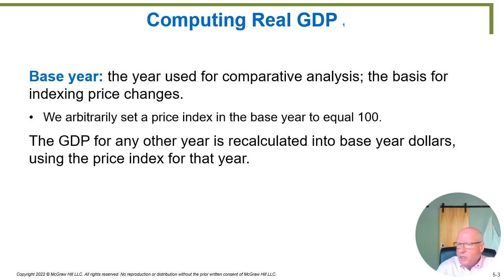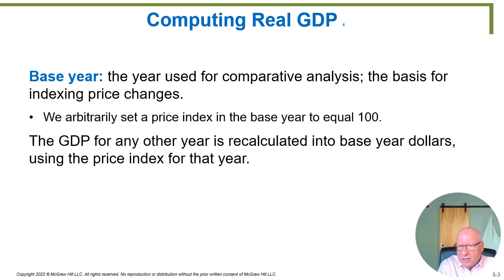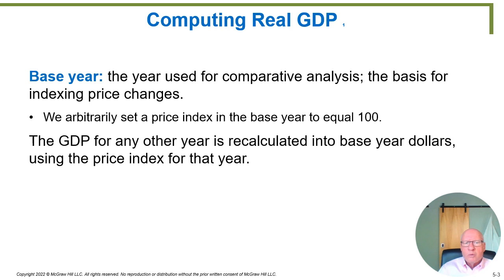Every ten years or so we do another survey, because with new inventions coming out you can't stick with the same survey forever — things have changed so much over the years. So roughly every ten years the government goes out and does another survey and then declares that to be the base year. We're going to recalculate our GDPs for all years into base year dollars, and then we can declare those numbers to be real GDP.